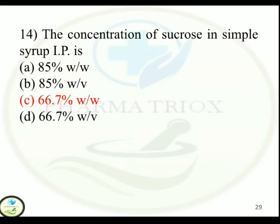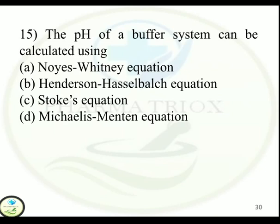Question 15: The pH of a buffer system can be calculated using — Option A: Noyes-Whitney equation. Option B: Henderson-Hasselbalch equation. Option C: Stokes equation. Option D: Michaelis-Menten equation. Correct answer is Option B — Henderson-Hasselbalch equation.